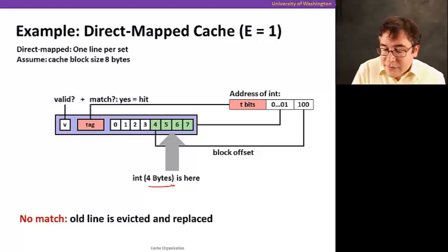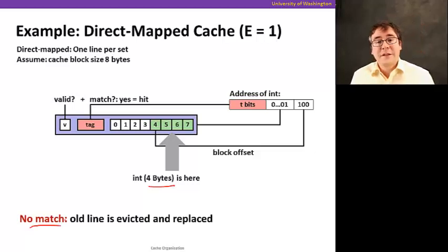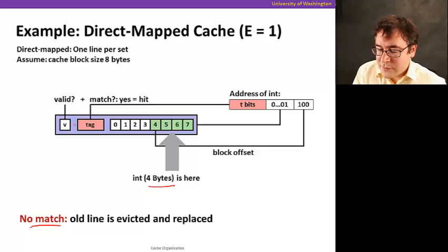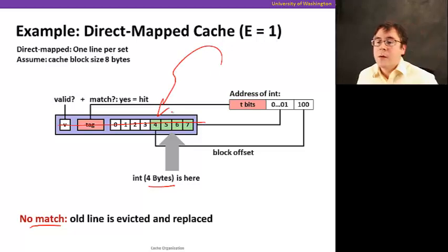Now, if there's no match, if it's a cache miss, what's going to happen? The old line, whatever was here, is going to be scraped away, is going to be thrown away, and the data that comes back from memory is going to come back and replace the data that was there. Now we know how reads work on direct mapped cache.